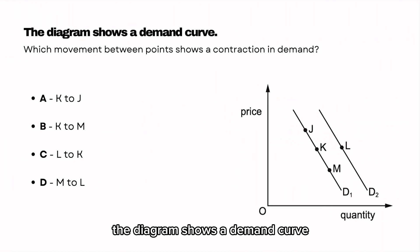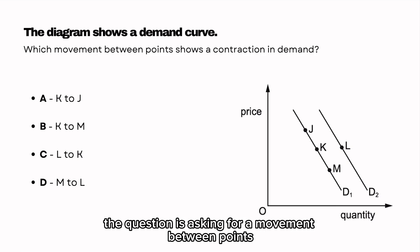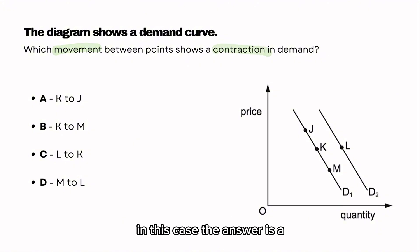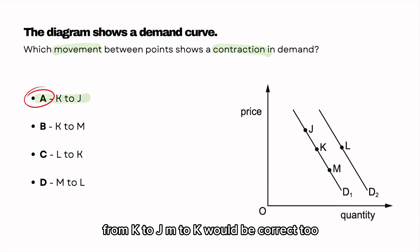The diagram shows a demand curve. Which movement between points shows a contraction in demand? The question is asking for a movement between points and a contraction. The answer is A, which is K to J, as there is a movement along the demand curve from K to J. M to K would be correct too but there is no such option.